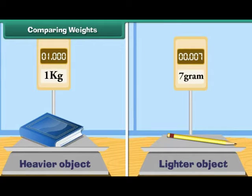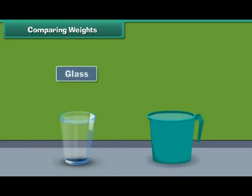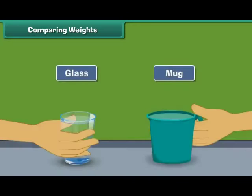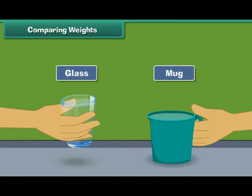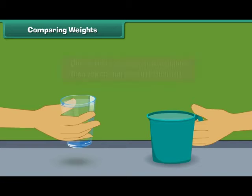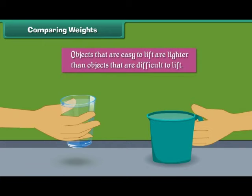A heavier object has more weight than a lighter object. Let us understand it with the help of an example. Fill a glass with water. Fill a mug with water. Try to lift both. Which is easier to lift? Quite obviously, the glass filled with water — it is lighter than the mug filled with water. Therefore, we can say that objects that are easy to lift are lighter than objects that are difficult to lift.